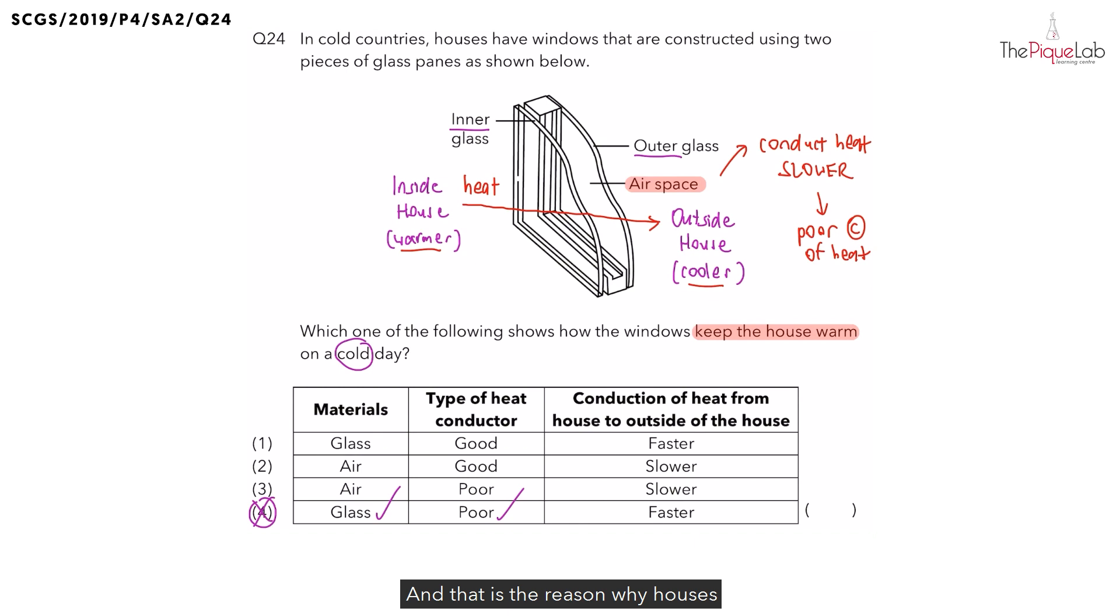And that is the reason why houses in cold countries have two glass pieces as their windows, because this would allow air to be trapped. And we know that air is a poor conductor of heat. So this will reduce the rate of heat loss from the inside to the outside of the house, keeping the inside of the house warm.